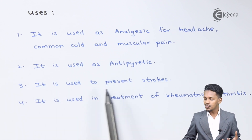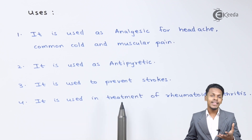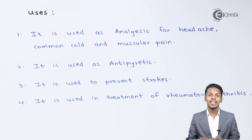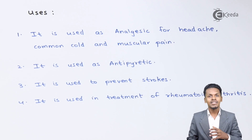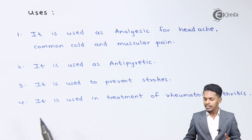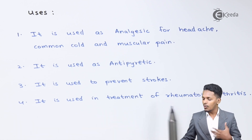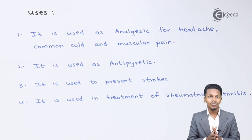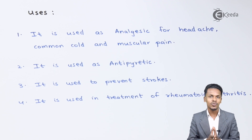Aspirin is also used to prevent strokes. This drug can act as a non-clotting agent — because the blood is not clotted, there will be a flow of blood, and that is how we can avoid strokes and heart attacks. Additionally, it is used in the treatment of rheumatoid arthritis, which is related to pain and weakening of bones, so aspirin can help avoid that pain as well.